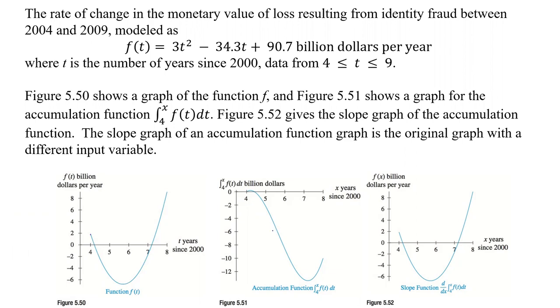Now this one shows the accumulation function. So we're basically finding from 4 to x f(t)dt. So we're taking the integral of it, and we're finding our accumulation function here. And then after that, we're going to take the derivative of that, or we're taking the slope function of this graph. So now we're taking this and taking the slope function or the derivative of it, and we get this. And guess what? We're back to where we were to start with.